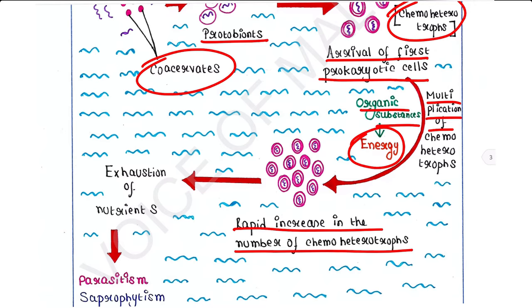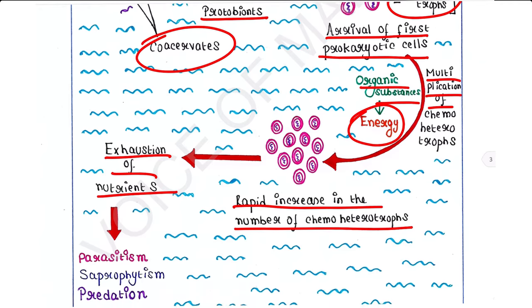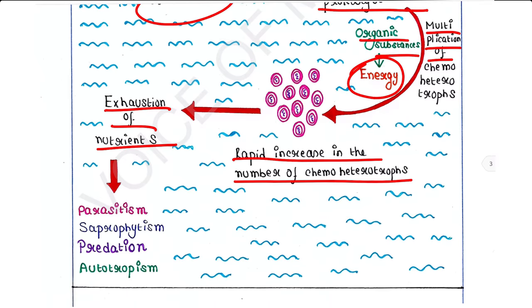But once they increased in number, they used all available organic substances from the sea, and the nutrients began to disappear and gradually exhausted. This led to the evolution of several other modes of nutrition such as parasitism, saprophytism, predation, and autotropism, because cells evolved in order to get their food and change the mode of nutrition due to the exhaustion of nutrients in the ocean.